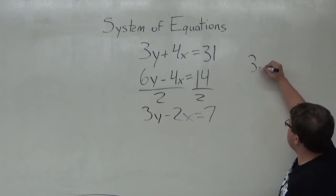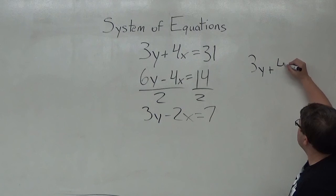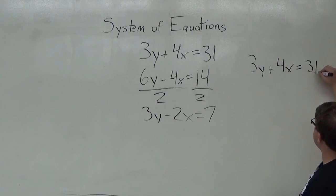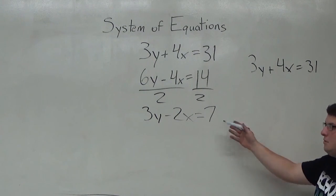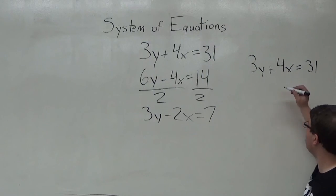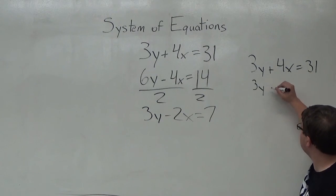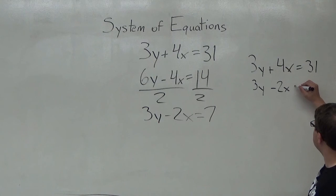So I'm going to rewrite the first equation: 3y plus 4x equals 31. And now this new second equation, which I've derived, is 3y minus 2x equals 7.